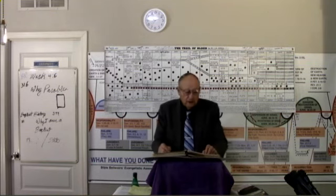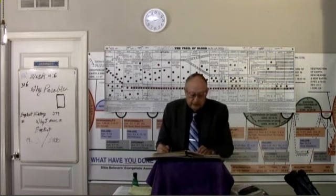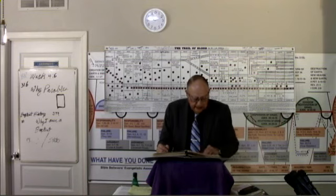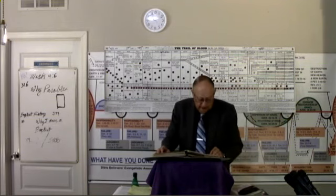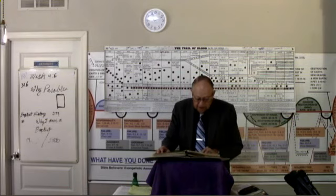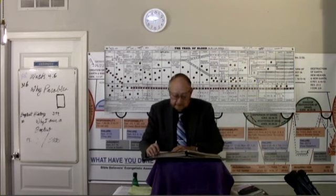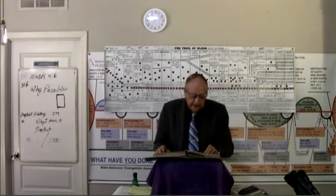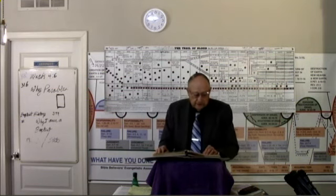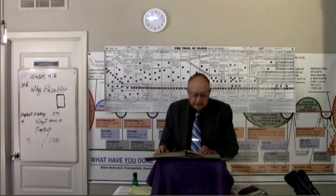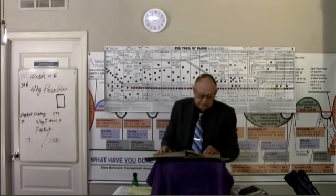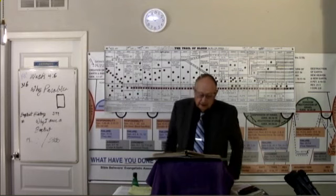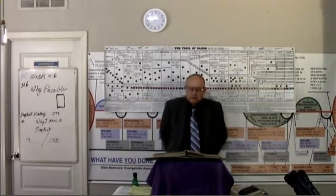Now, verse number seven. And another, and other seed, it fell. Third person singular, second aorist indicative. It fell in the thorns, among the thorns. Acanthos, thorns.